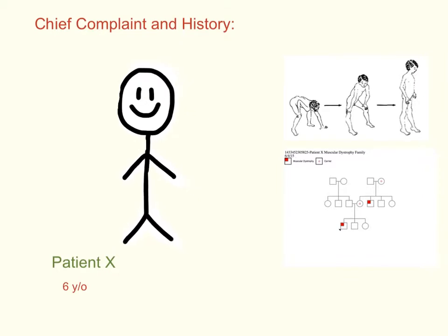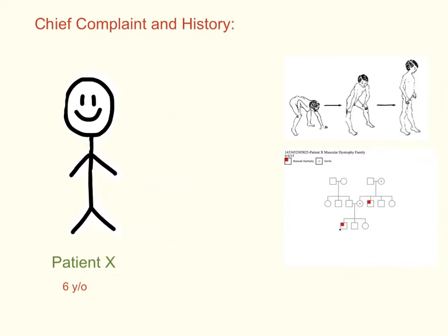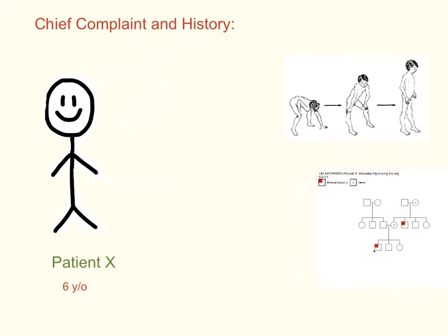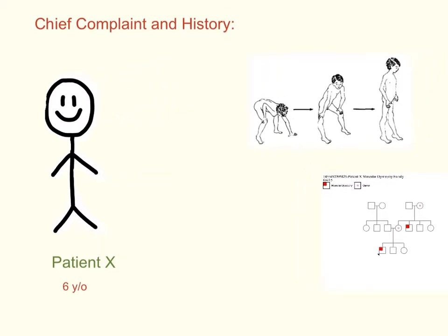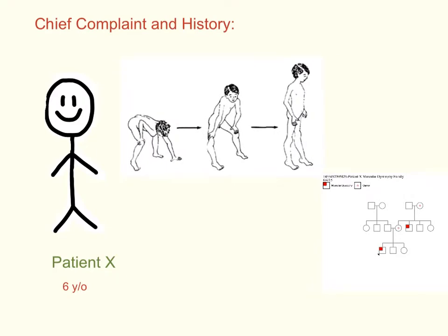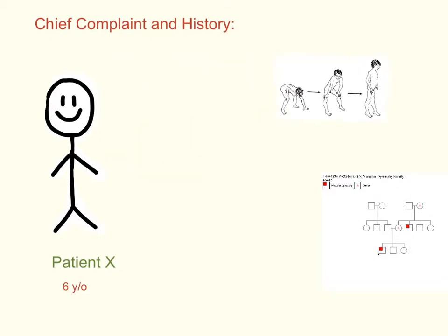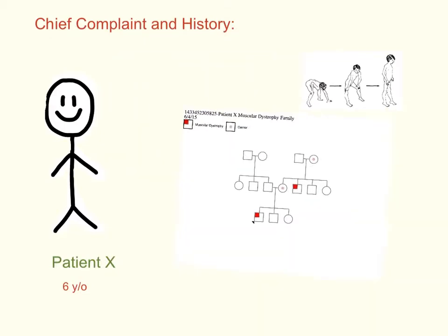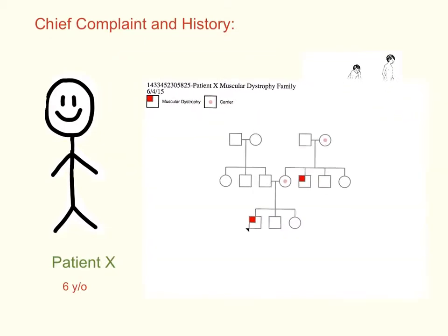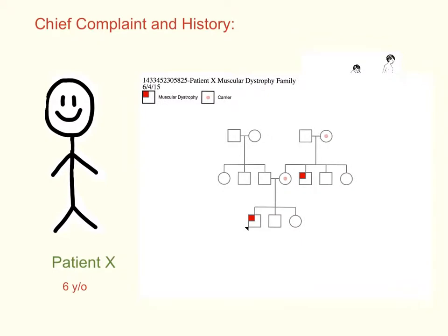The patient's mother has noticed that his calves are larger than children of similar age, and his teacher commented on his difficulty standing up after sitting crisscross during class and keeping up with his peers in gym class. The patient's mom is also concerned because of her family's history of muscular dystrophy. A family tree was drawn, and other affected members include his older sibling and maternal brothers.